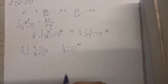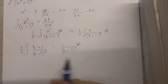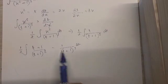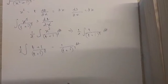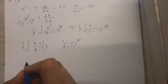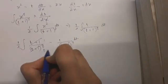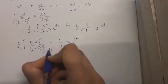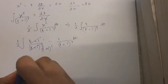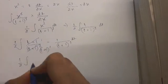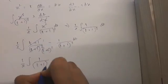I divided it into two separate fractions — we can write the numerator as t plus one minus one and split into two fractions. This simplifies: the first fraction becomes one upon t plus one the whole square. So the integral is one-half times the integral of one upon t plus one the whole square, minus one upon t plus one the whole cube.